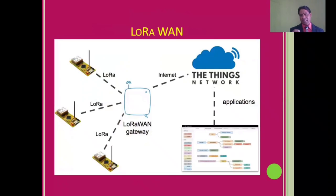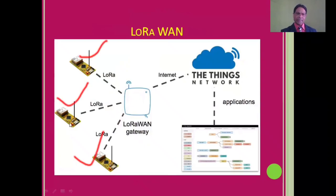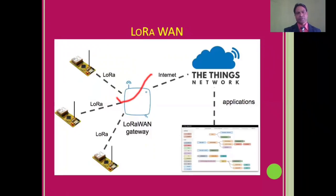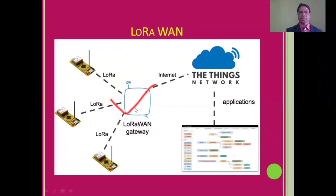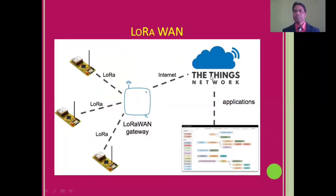This is the actual LoRaWAN network. You can see these are the LoRa modules, and they are connecting with devices — sensors and actuators. They take information from the sensors and send it to the gateway node, which is the LoRaWAN gateway. That gateway then transmits to the cloud. This is the beauty and the work of LoRaWAN.